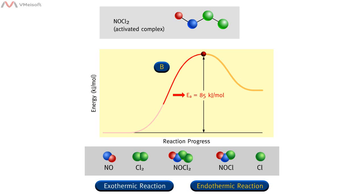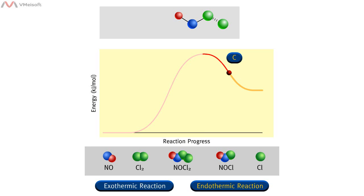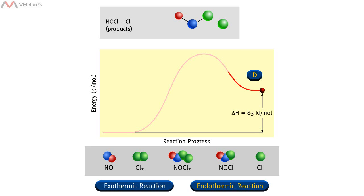The activation energy, which is the minimum energy needed to initiate this reaction, is 85 kilojoules per mole. At this point in the reaction, the bond between nitrogen and chlorine continues to strengthen, and the bond between the two chlorines continues to weaken. A bond has now formed between nitrogen and chlorine, and the bond between the two chlorines has broken.